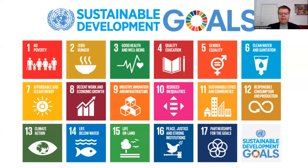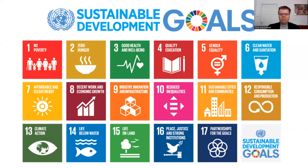Then there are three clearly environmental goals. Goal 13 is climate action, 14 is life below water, and 15 is life on land. These are the three environmental goals. It might look like there is less weight on the environment than the other two pillars of sustainability, but of course it's not really just about counting the number of goals.